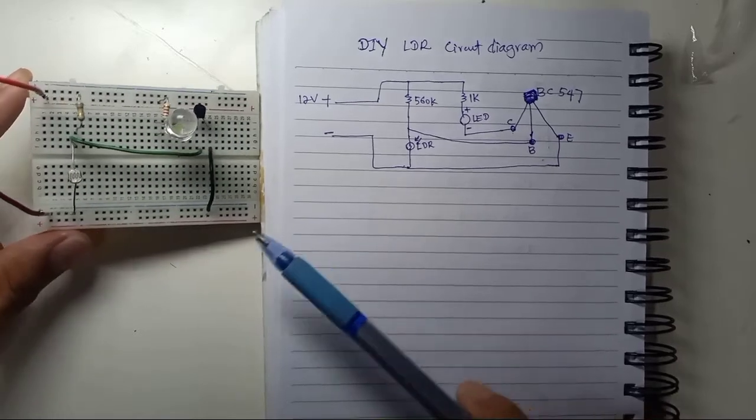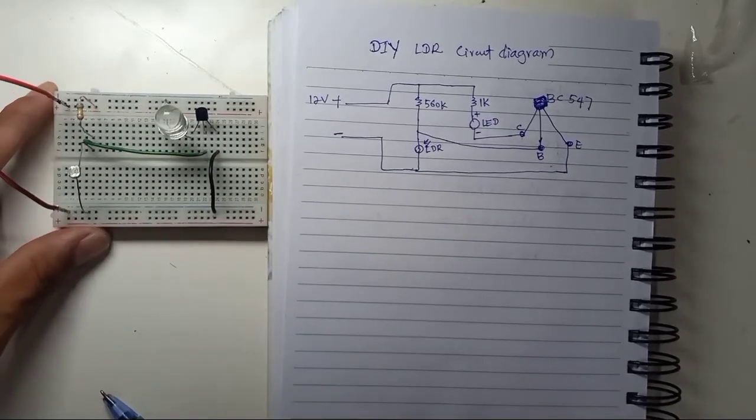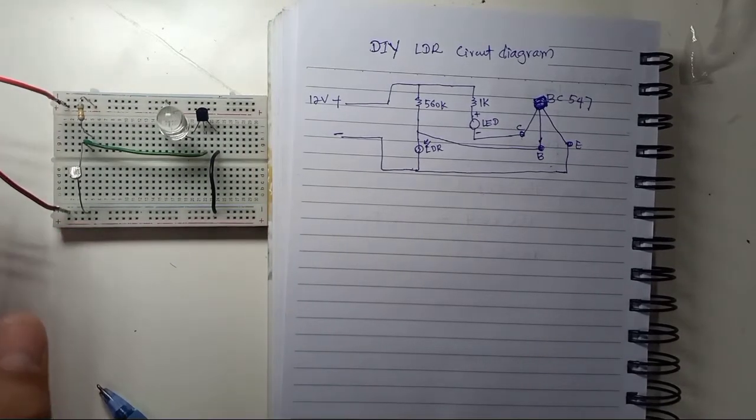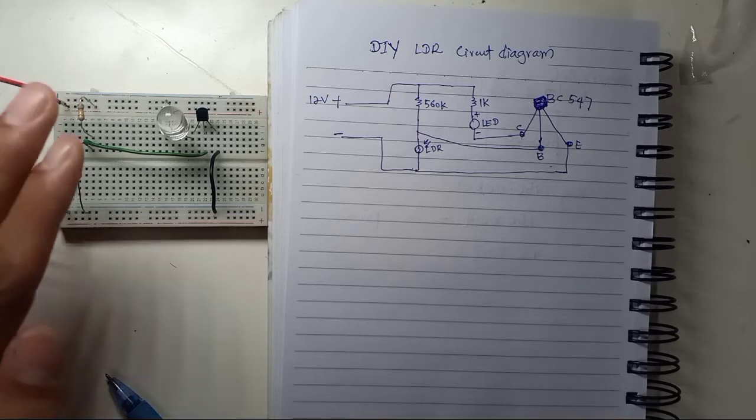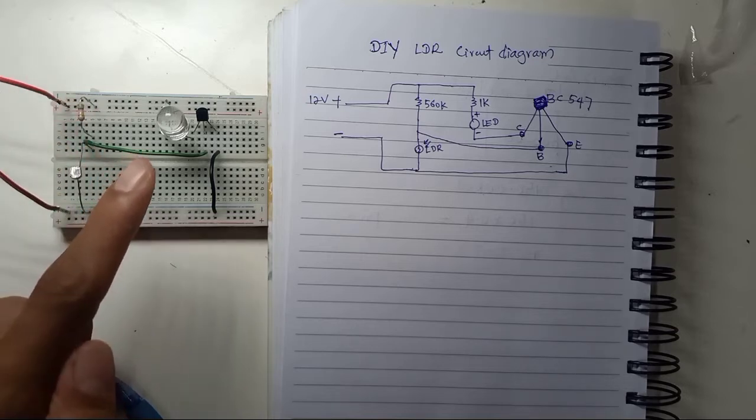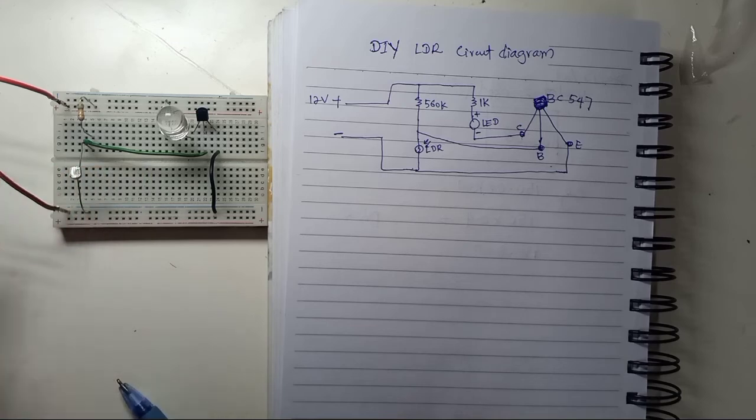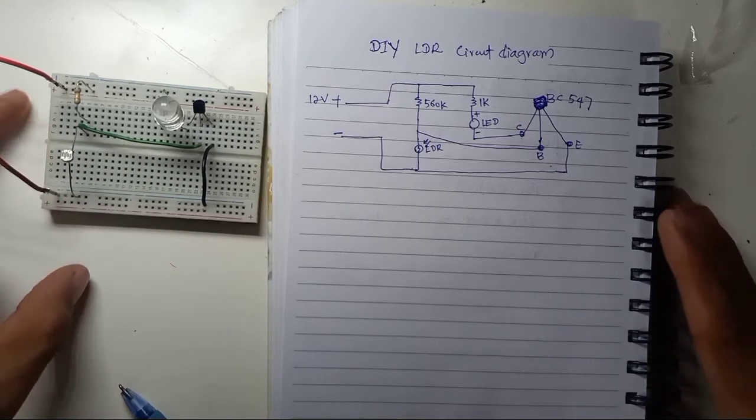So this LDR is work. Once the darkness is coming, then the ohm resistor is low. Now, this is a bright time. The resistor is very high. So the LED will not be turned on. But once the dark, the resistor of this LDR is low. So the LED is going to be bright. So let me turn on my power supply right here.